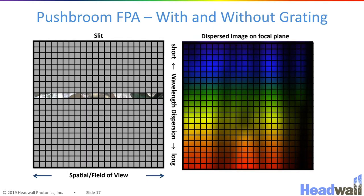So why do the push-broom sensors only collect the image of a slit rather than the full 2D scene every time? That's because we also want to gather spectral information. We're not throwing away part of the focal plane — we're actually filling the whole focal plane, but one dimension is the spatial dimension and the other dimension is the spectral dimension.